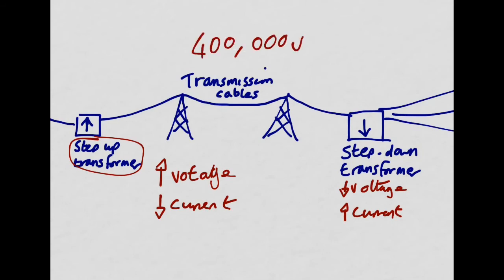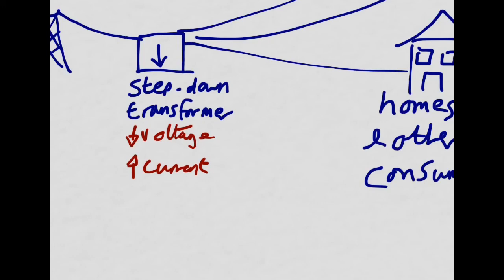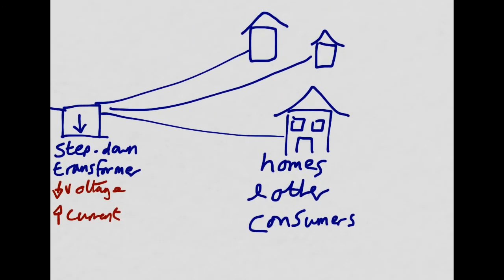400,000 volts through your plug socket is not good. That will just zap you if you try to plug something in. So we need to have step-down transformers to reduce the voltage to safe, usable levels which are actually useful to us in the home. And then the homes and other consumers of businesses, we've got businesses, we've got schools, factories,